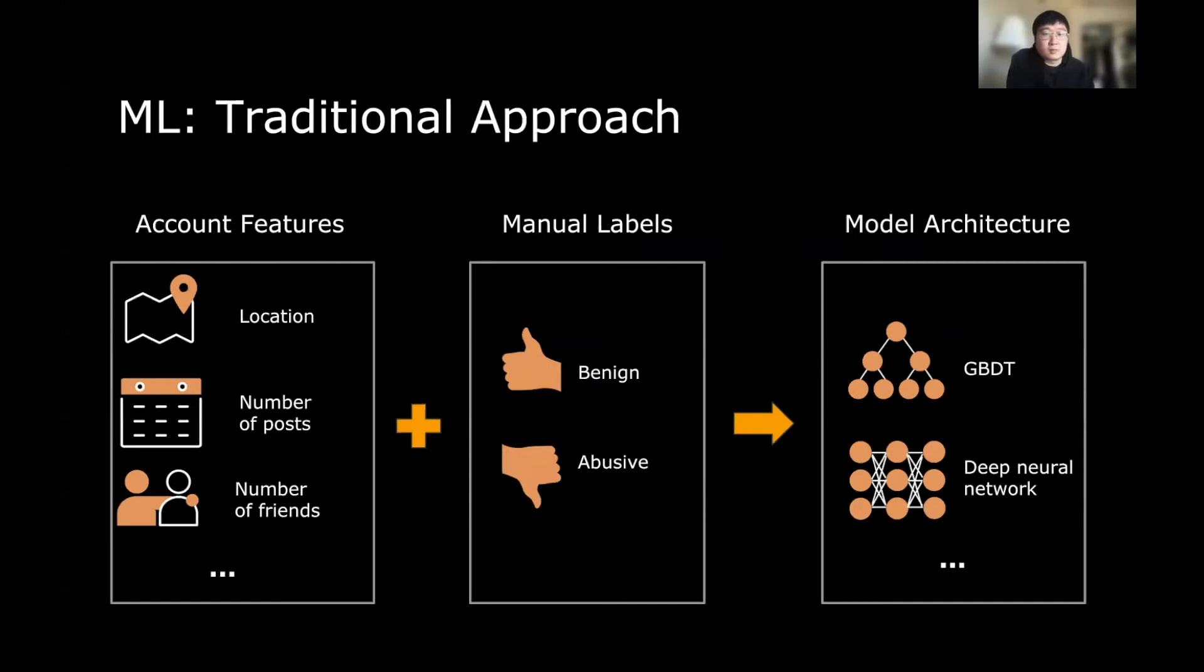The traditional ML approach for the integrity problem is that we first have the account features and then we use the manual labels. In combination, we feed them together into the model architecture. The types of account features include, for example, location features, number of posts from the account, number of friends of the account, those direct features owned by the target account.